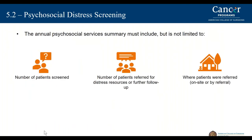The annual psychosocial services summary should include, but is not limited to, how many patients were screened, the number of patients referred for distress resources or further follow-up, and where the patients were referred to — whether on site or by referral — as a result of the screening process.